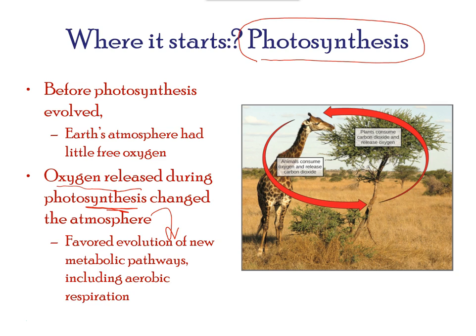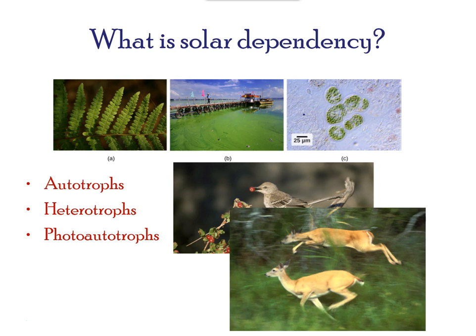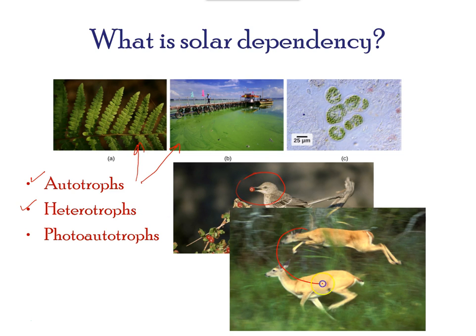Solar dependency results in dividing all organisms into three main groups. Autotrophs are organisms that can make their own energy molecules — these are green plants and bacterial cells that have chlorophyll. Heterotrophs are organisms that get their energy from eating plants and smaller animals. Photoautotrophs store energy using the sun.